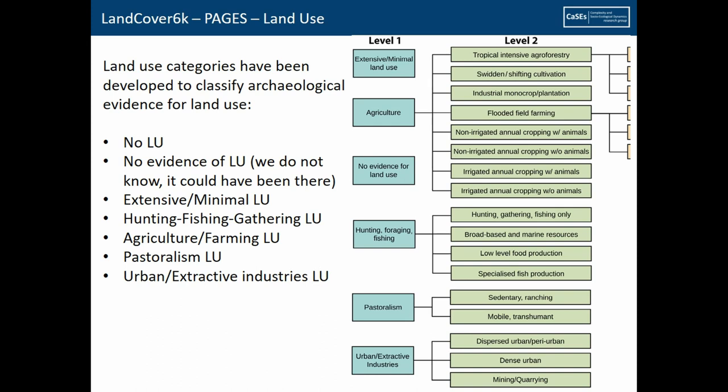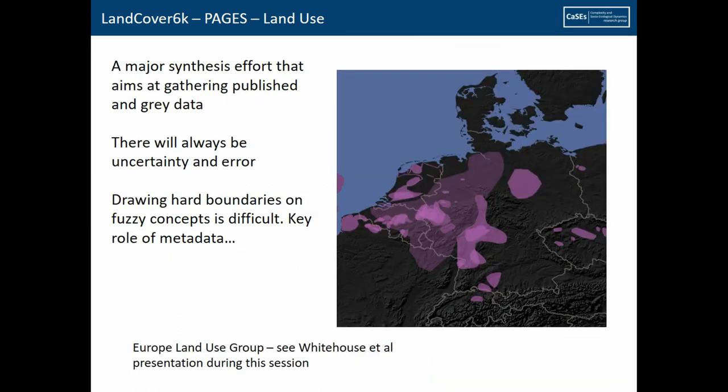The standardization process involves producing land use categories that can be used to identify and classify the way people used land in the past all over the world. The level-one categories, which are the highest level, are quite broad, and the more you go down the more these categories become subdivided. The Eurogroup has been doing a lot of work, and the idea is to produce maps that gather together published data as well as gray data sitting in researchers' drawers.